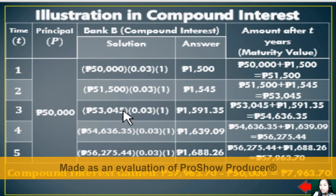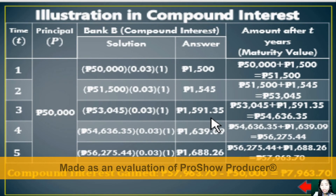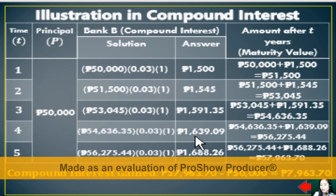In Year 3, using the previous year's total of 53,045 pesos times 0.03 times 1, the compound interest is 1,591 pesos and 35 centavos, giving a maturity value of 54,636 pesos and 35 centavos. In Year 4, multiplying by 0.03 and 1, the compound interest is 1,639 pesos and 9 centavos, with a total maturity value of 56,275 pesos and 44 centavos.